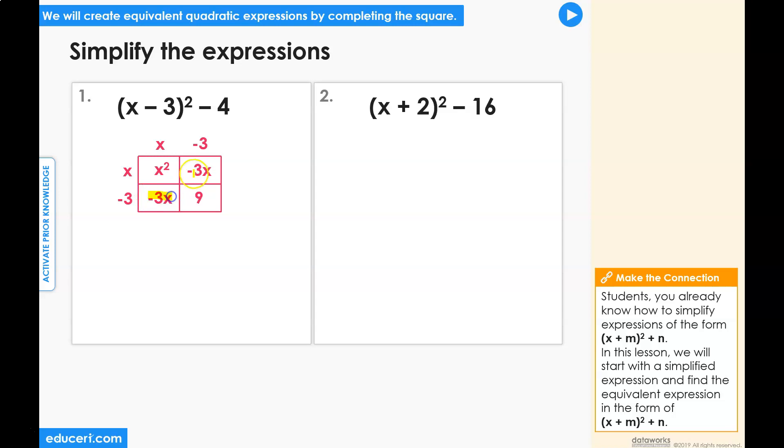Taking out these terms and combining the like terms, we get x squared minus 6x plus 9.